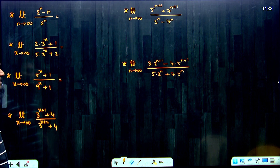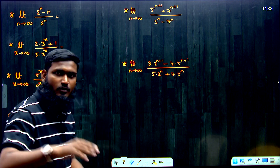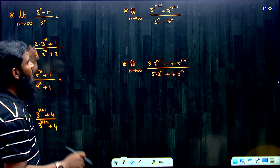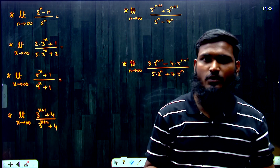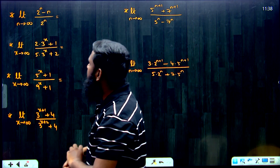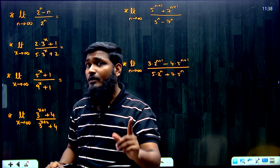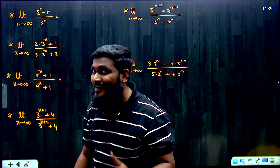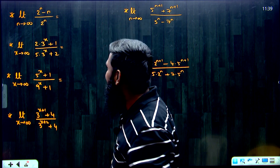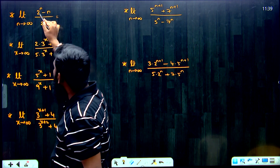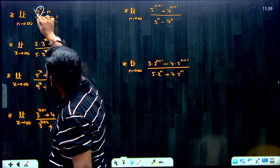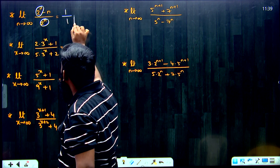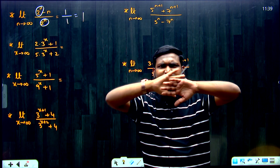Let us start the questions. Question 1: limit n tends to infinity of (2^n - n) / 2^n. From this complete question, what is the highest base term? Only 2^n. What is the coefficient of 2^n in the numerator? 1. What is the coefficient of 2^n in the denominator? 1. So 1 divided by 1 equals 1. That's it.